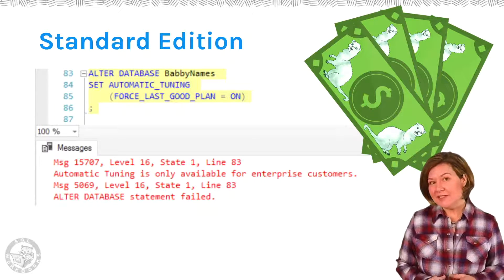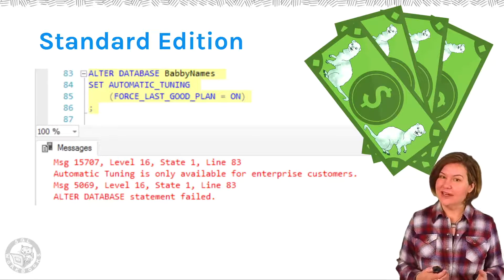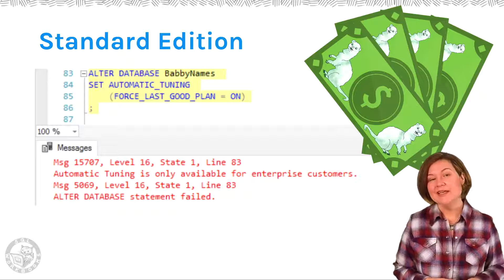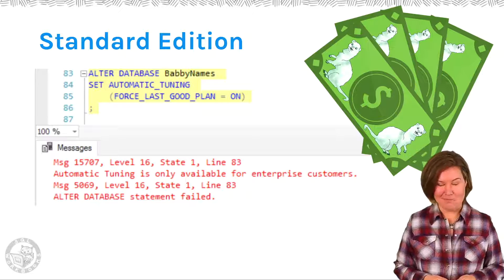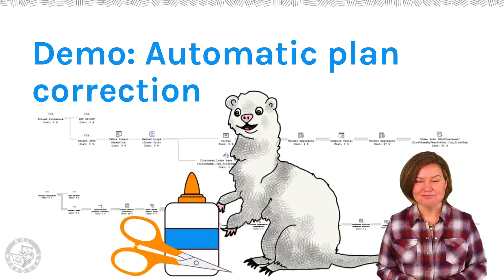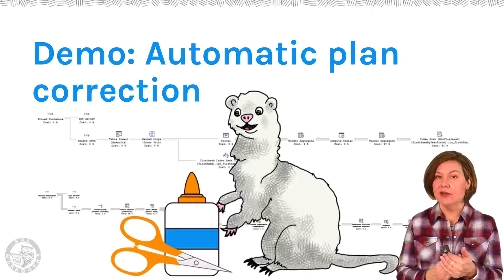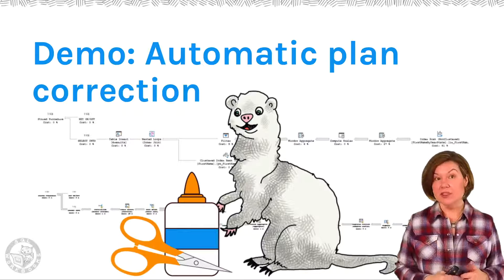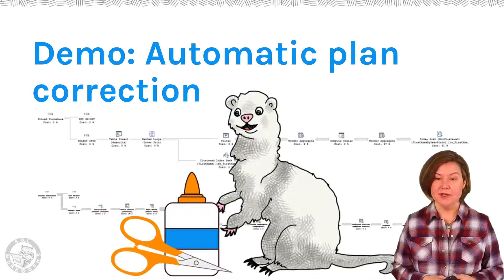If you try to run this command in Standard Edition, it gives you a message that essentially says please insert more dollars if you want to turn on the automatic tuning feature. But like I said, I will show you how, if you are in Standard Edition, you can see the types of queries that this would tune in your Query Store.